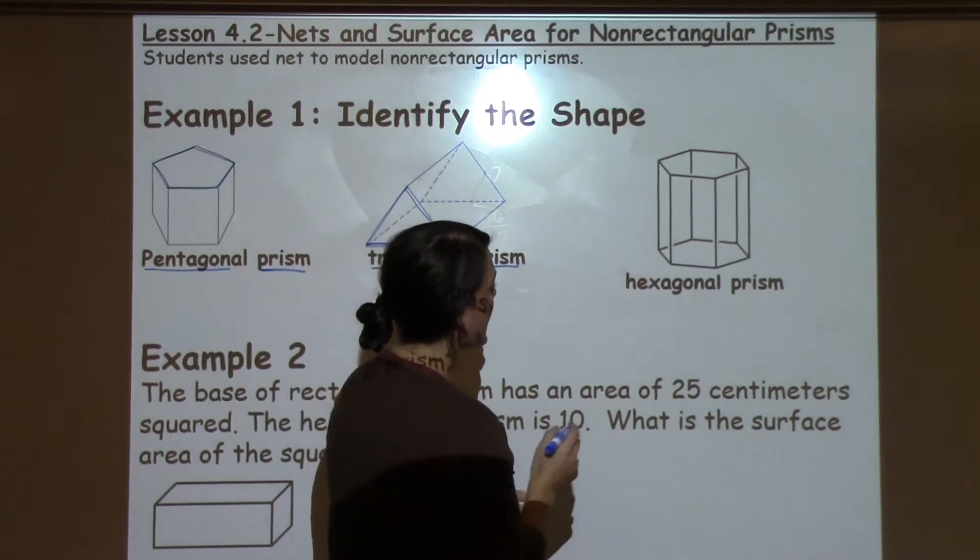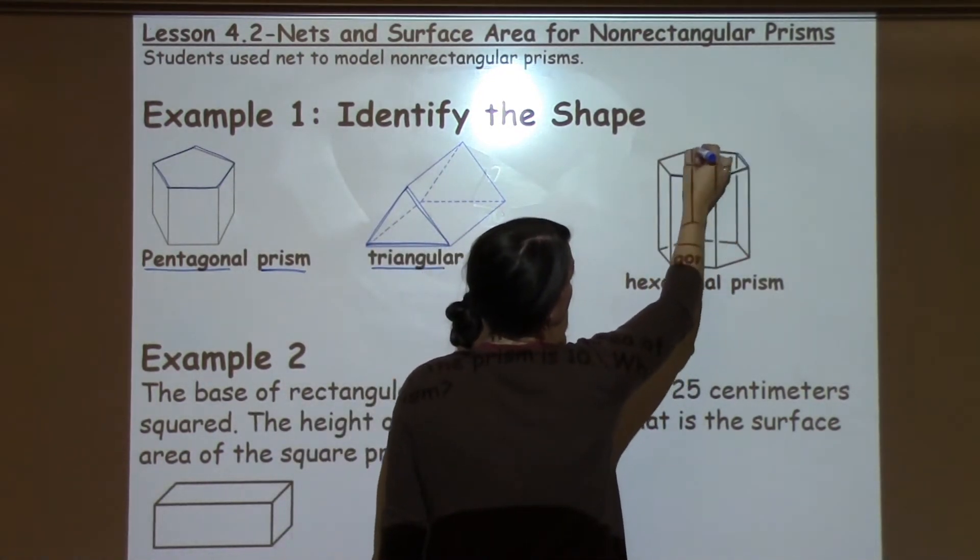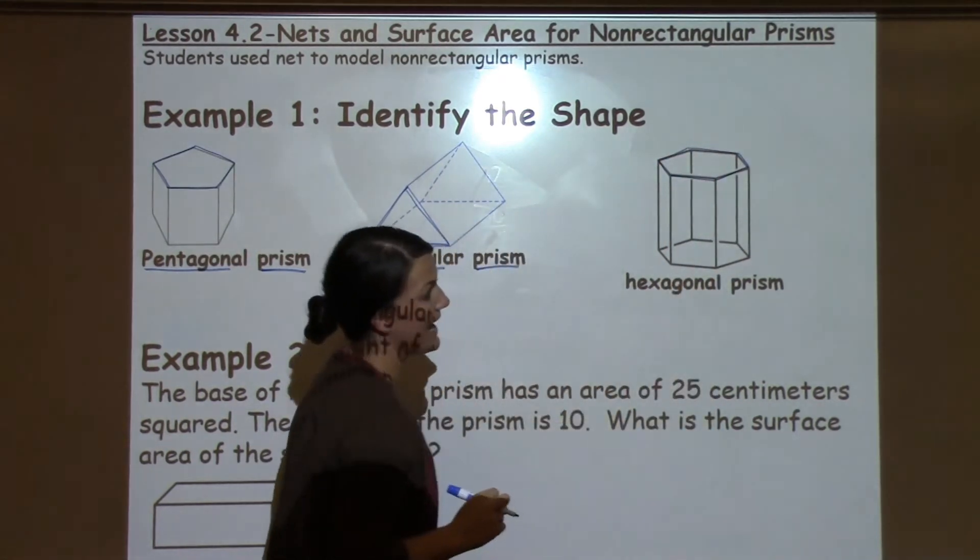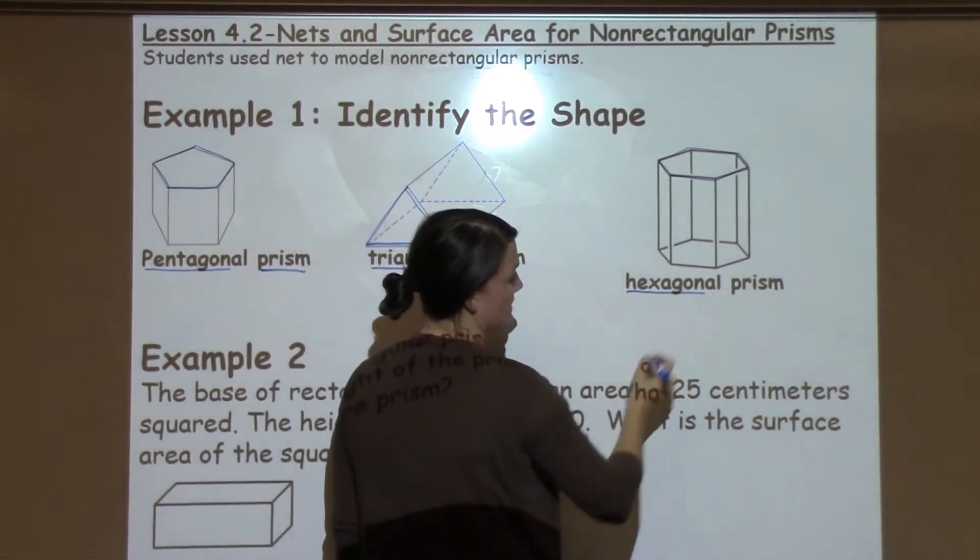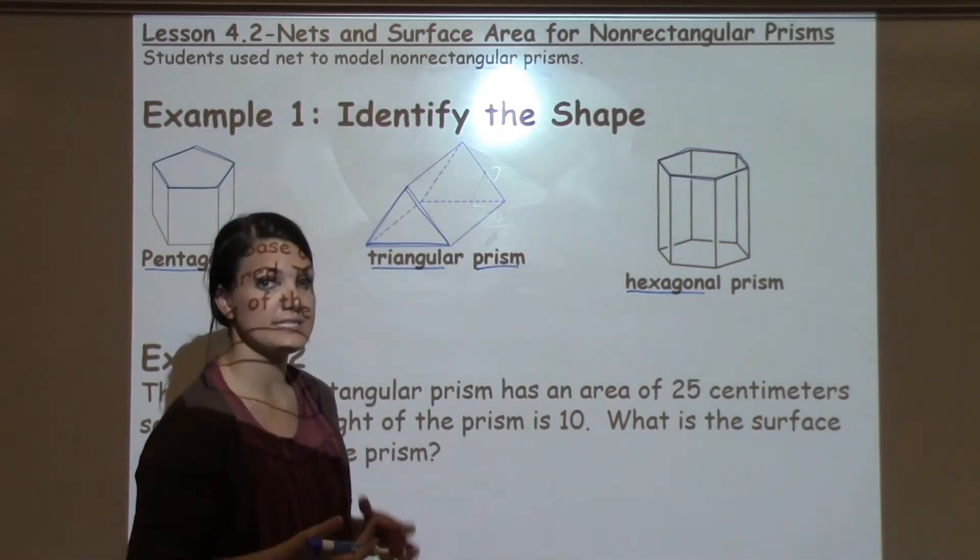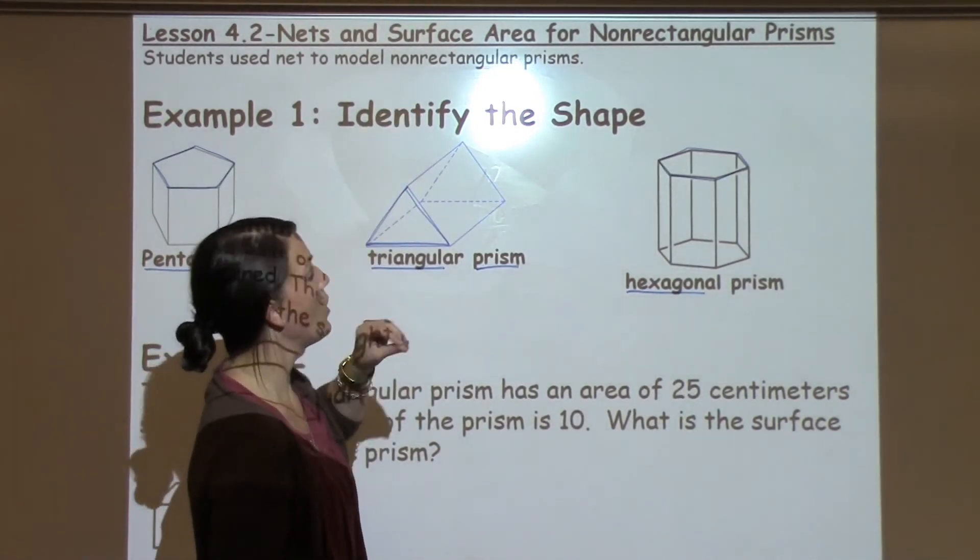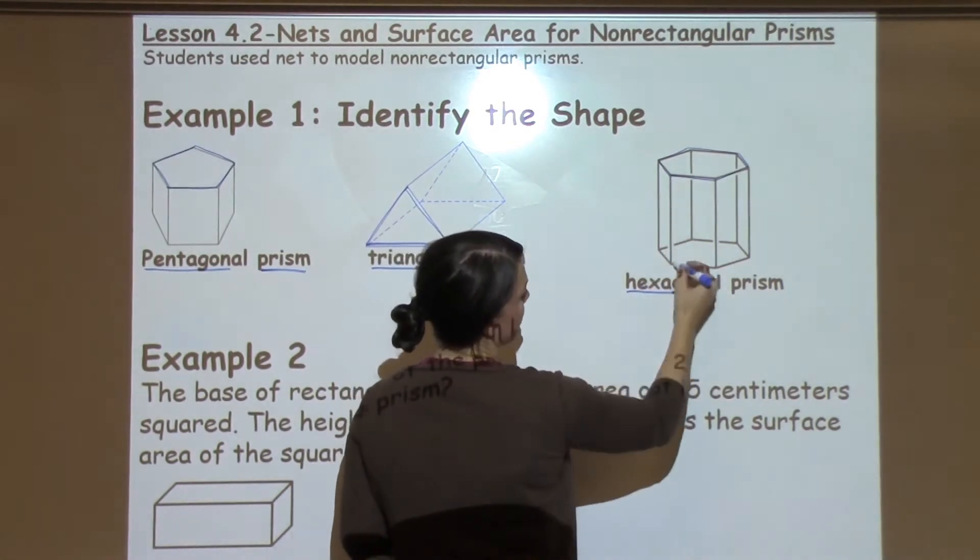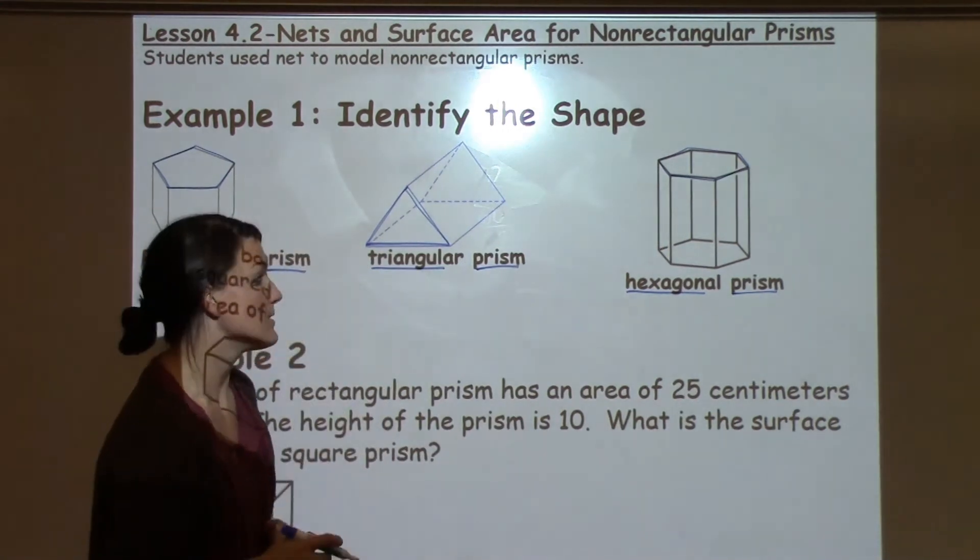And then the last example that we have is a hexagonal prism. And it's a hexagonal prism because when I look at the top and bottom, I see a six-sided shape. A six-sided shape is called a hexagon. And then I look to see, does it have a hexagon at the bottom and then come to one tip-top point? Or does it have long rectangles that are stretching up or stretching across? In this case, it has long rectangles, so I know that it is a prism.